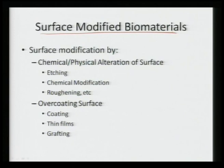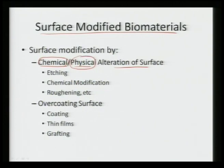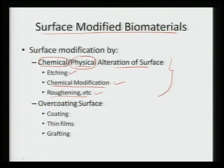Once a biomaterial is introduced into the body, the surface can be modified either by chemical or physical alteration of the surface. We take the surface of the implant or device material and somehow change the chemistry of the top layer — changing the chemical or physical nature of the implant surface directly. This can be done by etching, chemical modification by reacting with other species, or roughening to enhance surface area.